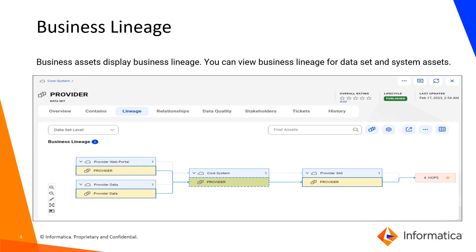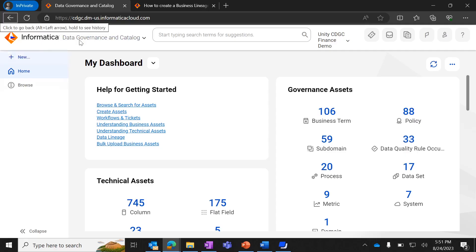Business lineage is one of the lineage types available in Cloud Data Governance and Catalog. Business assets display the business lineage, and you can view business lineage for datasets and system assets. Business analysts typically use business lineage to understand the source of the data and ensure that the data is coming from a trusted source.